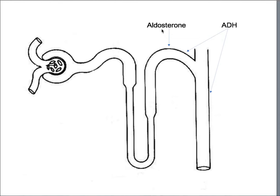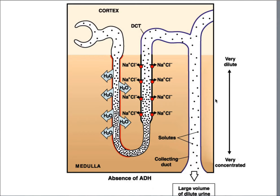Aldosterone drags in salt and water, so it changes blood volume and affects blood pressure. ADH drags in just water — it opens aquaporin doors in the collecting tubules and collecting ducts.